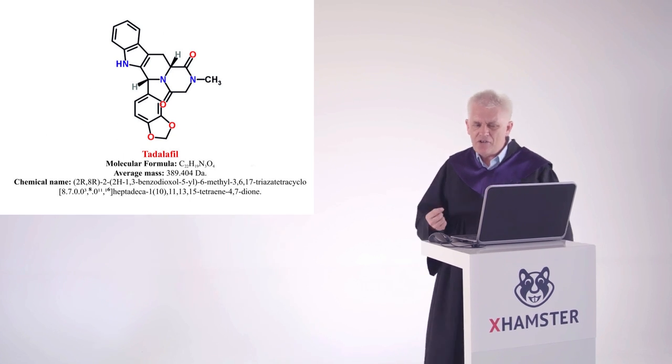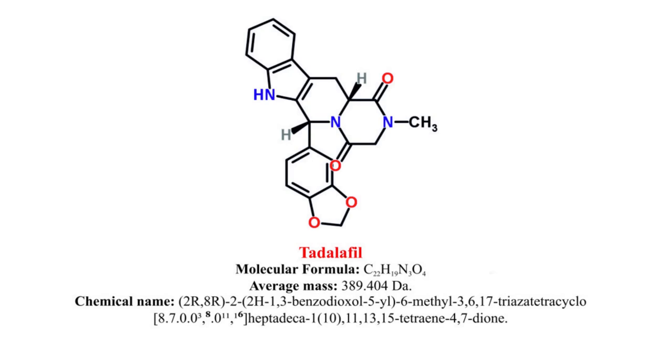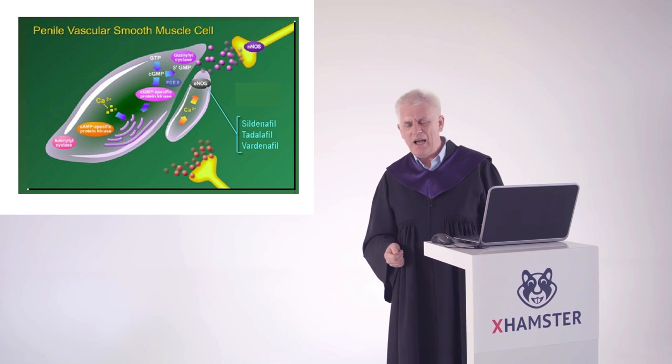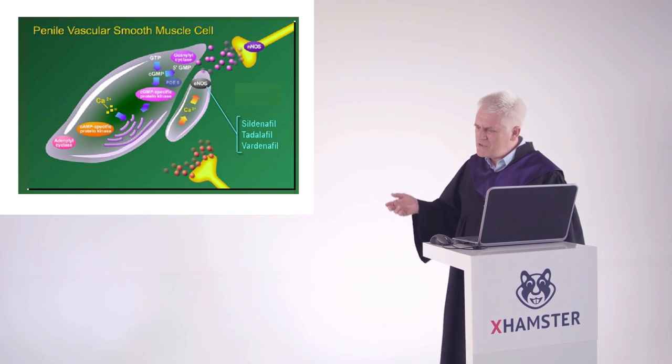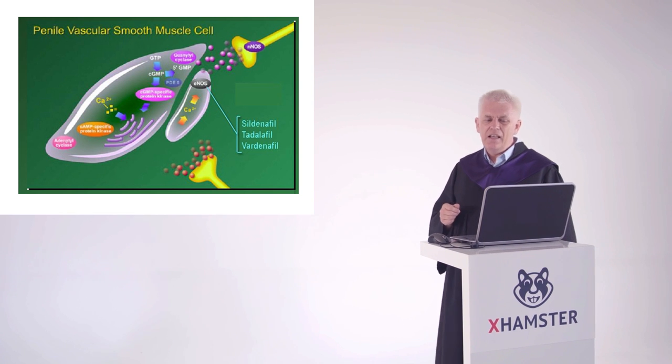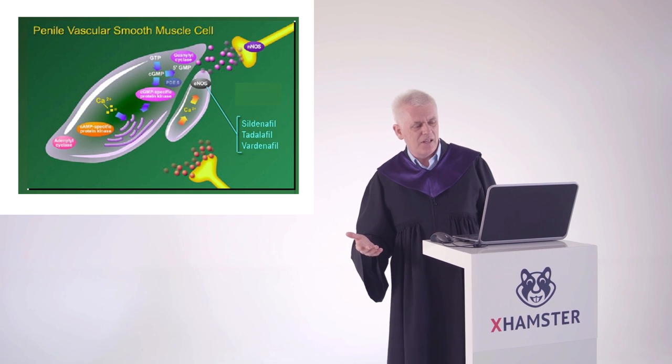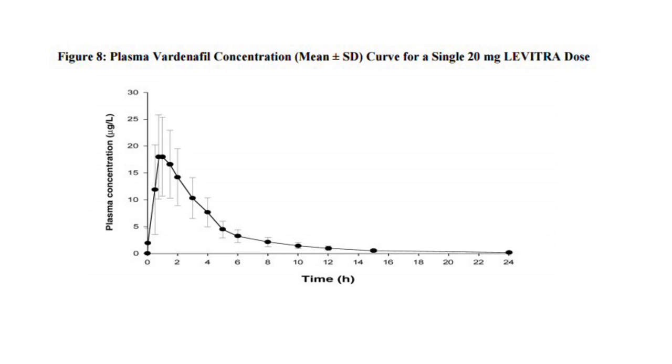You can see the structure of Tadalafil is different to the other two drugs, which means it's metabolized much more slowly. The other two, because they only differ between a methyl and an ethyl group, are essentially the same drug. They're broken down in about four to five hours in the body. Whereas Cialis, or Tadalafil, works much longer. The half-life in the body is about 17 hours, which is why it's often called the weekend pill, because you can take it on Saturday night and it will still be going Sunday morning.